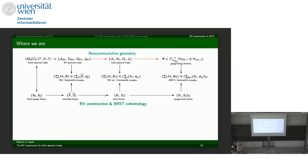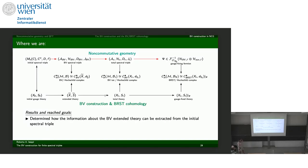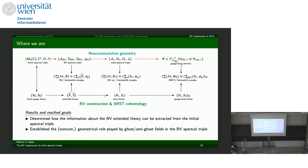To summarize: the goals achieved were determining how the initial spectral triple encodes the information needed to construct the BV theory — how to extract from our initial geometrical object the needed data — establishing how ghosts and ghosts for ghosts play a role at the level of the BV spectral triple (namely in the Hilbert space), and finally characterizing what happens for the cohomology.